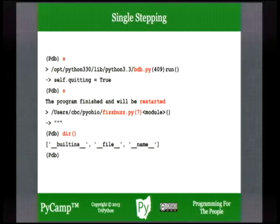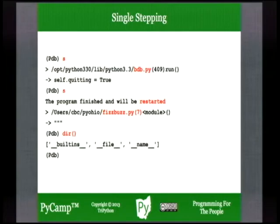When BDB ends, the PDB module reloads your program so you can step through it again — it wraps right around and runs it again. You hit 's' to restart — it says 'the program is finished and will be restarted' and restarts with the instruction pointer on line 1 ready to evaluate the doc string. The debugger also resets the current namespace for you, so you're all ready to debug from scratch again.